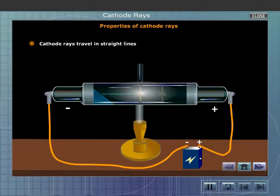When an opaque object is placed in the path of the cathode rays, a shadow is cast on the glass wall opposite to the cathode. This shows that cathode rays travel in straight lines.